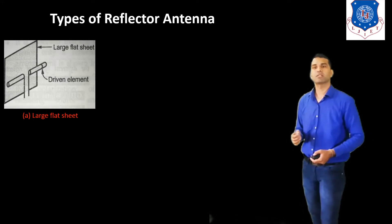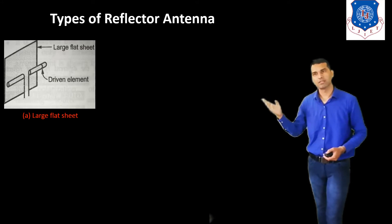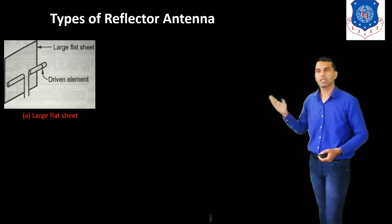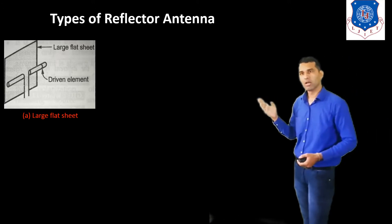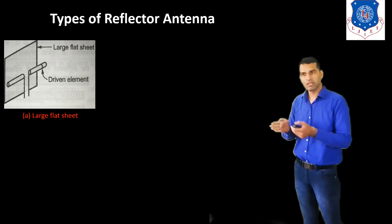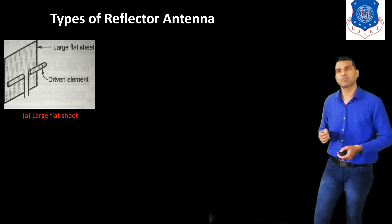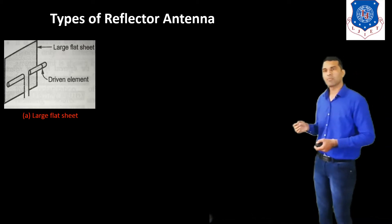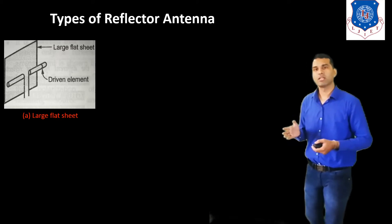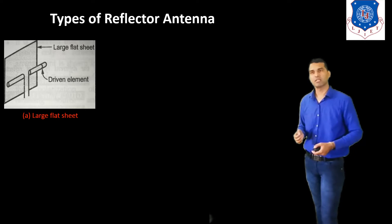Now we discuss about the types of reflector antenna. The first one is the large disc, or we can say large flat sheet reflector. Here in this figure, we see in the back side a large disc, and in front of that we see the driver element — it is nothing but the dipole antenna. This dipole acts as the primary feed antenna, and the large disc reflector is simply the secondary antenna.